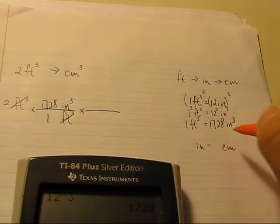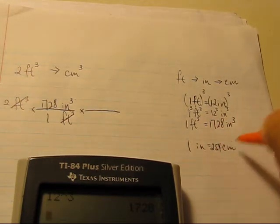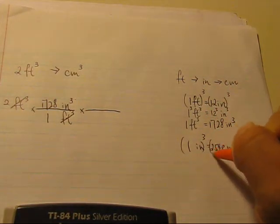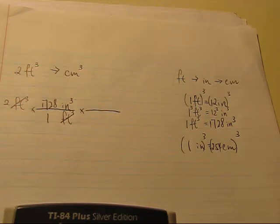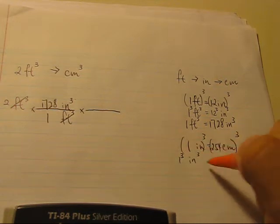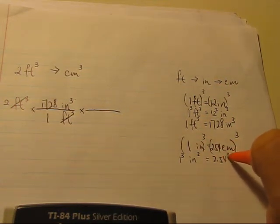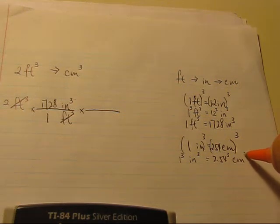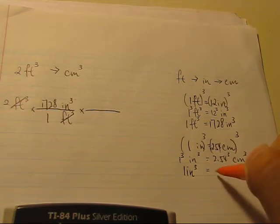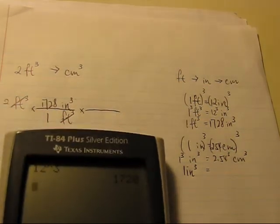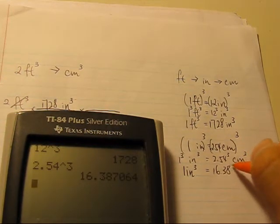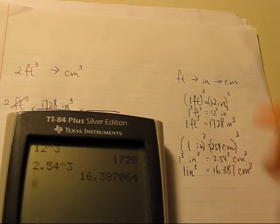Inches to centimeters: one inch is equal to two point five four centimeters. So we're going to raise to the third power on both sides. And it becomes one cubed inches cubed, two point five four cubed centimeters cubed. That is equal to one cubic inch and two point five four raised to the third power is sixteen point three eight seven cubic centimeters.